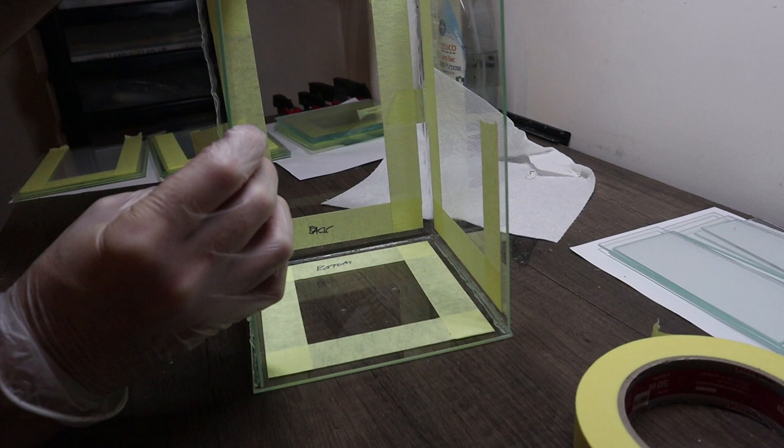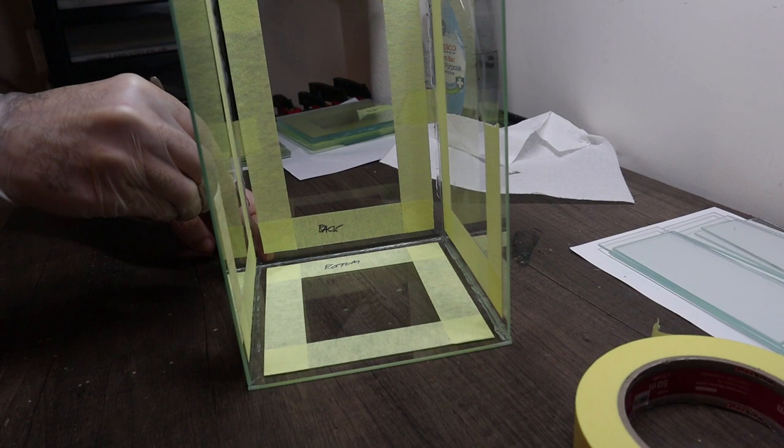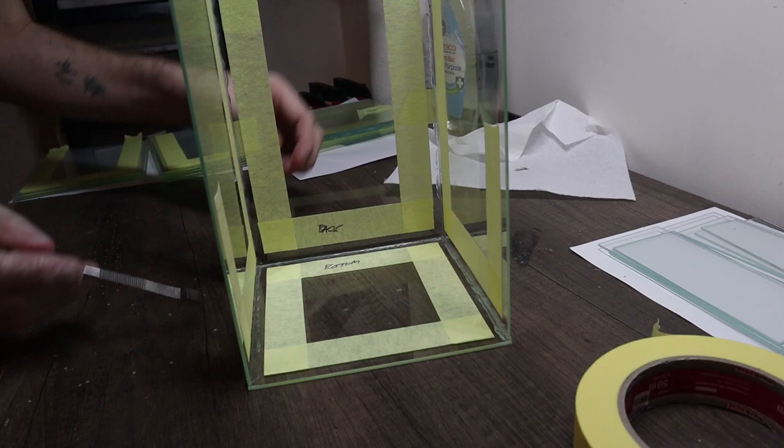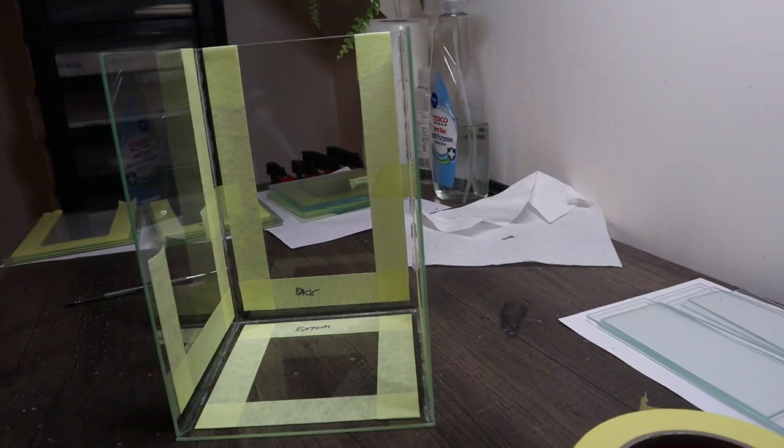Once you're happy with how everything's looking, I would probably suggest to leave it overnight to set as it is for now before we go on to the next step, which is going to be adding silicone into all the corners just to make sure everything's secure and watertight. That will eliminate any risk of any panels getting moved or anything like that when we go through the next silicone application.